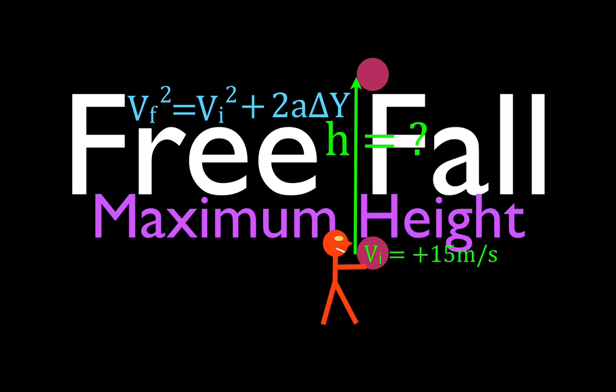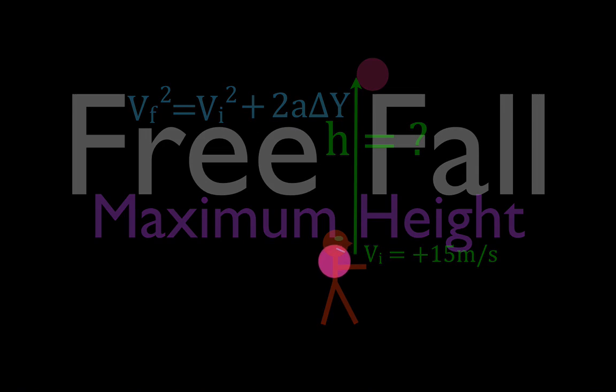Okay, in this video, we're going to go over another problem involving free fall kinematics. In this case, we're going to figure out the maximum height that an object will go when it's projected with an initial velocity straight up of 15 meters per second. So let's get started.